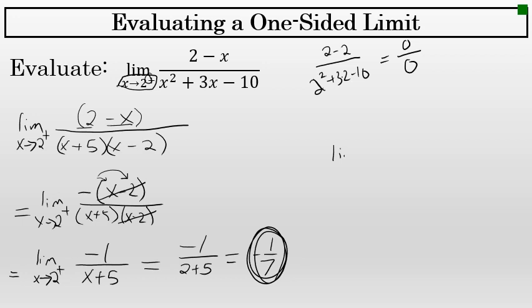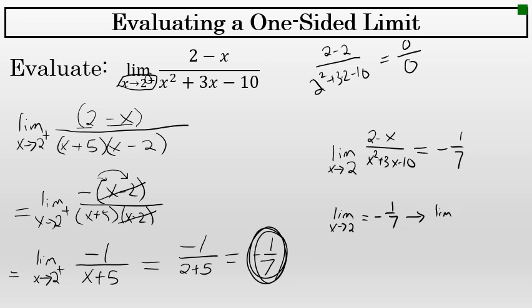The process I just went through is the same process I would have used to find the two-sided limit as x approaches 2 of (2 minus x) over (x squared plus 3x minus 10). The limit as x approaches 2 equals negative 1/7, and since that two-sided limit exists, both one-sided limits also equal negative 1/7. So the limit as x approaches 2 from the right is negative 1/7.